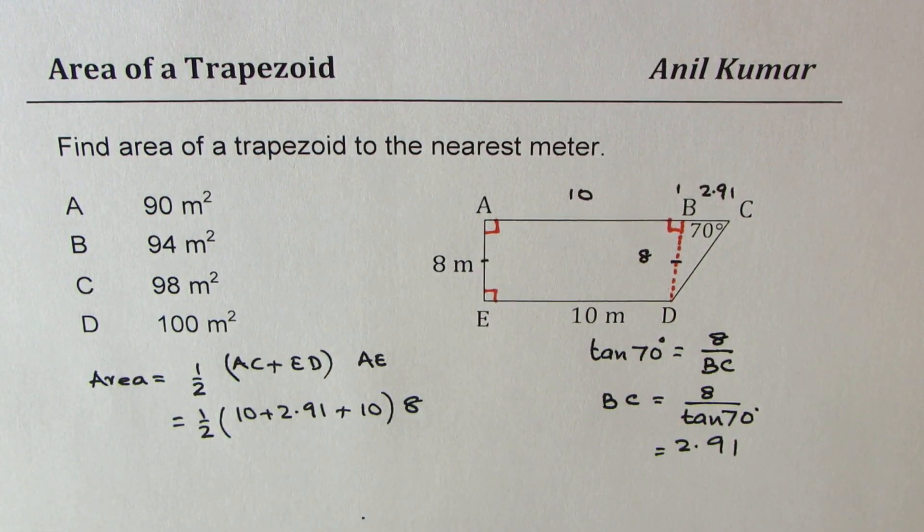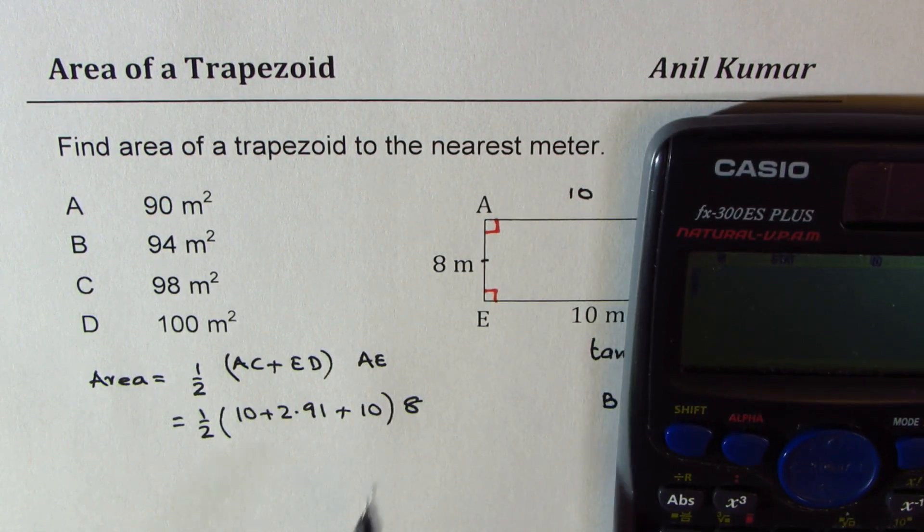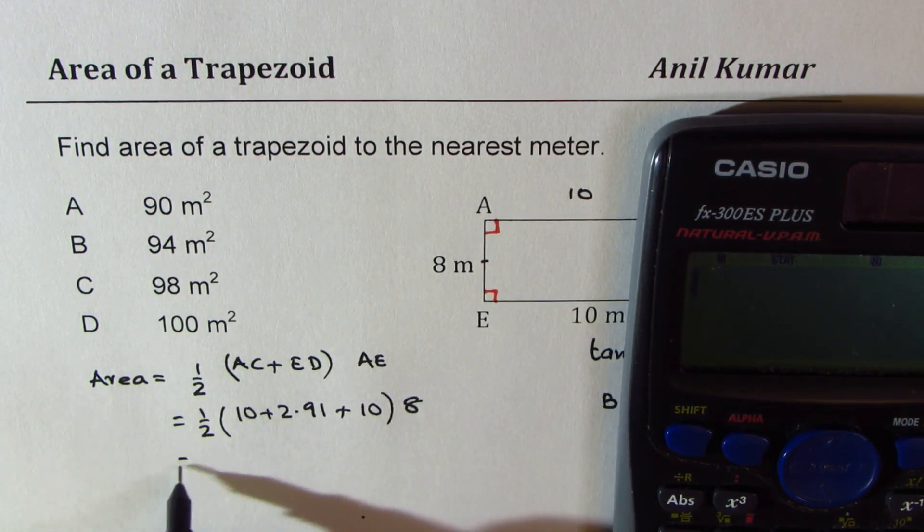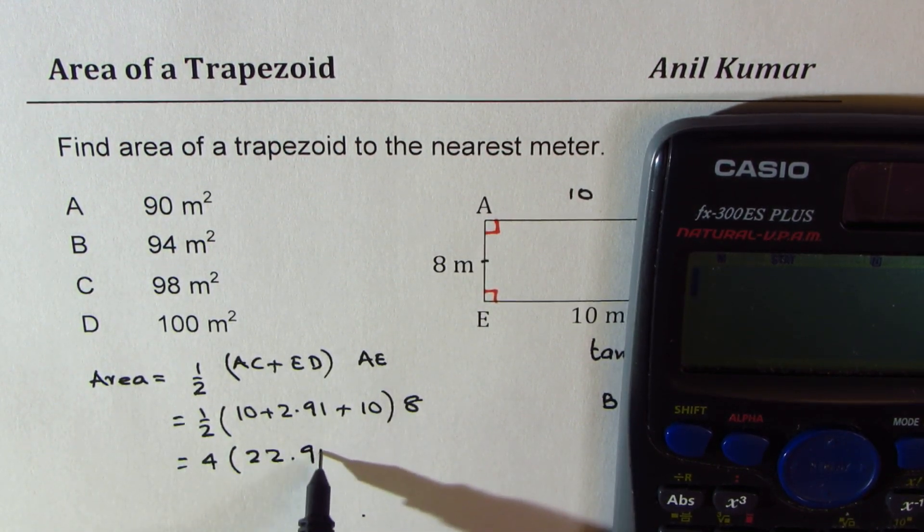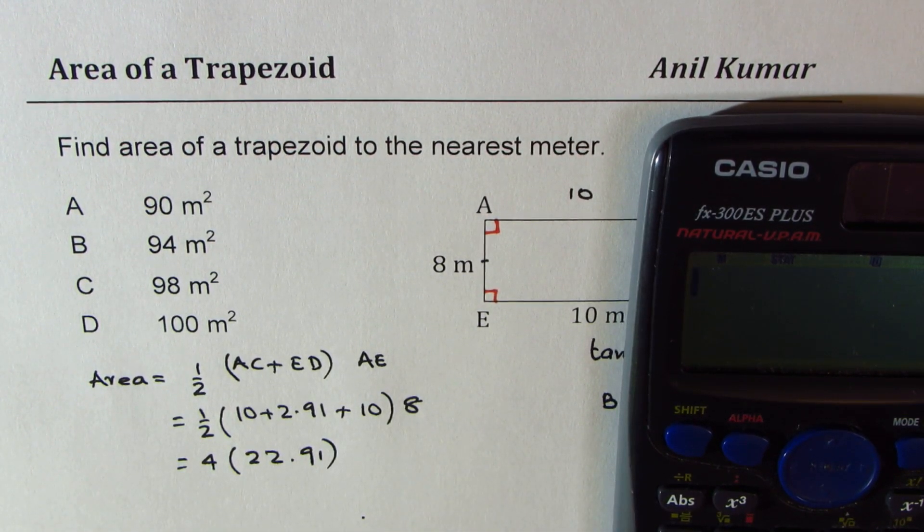So that should give us the answer. So it is half of 8 is 4. So we can write 4 times 22.91. So we get 4 times 22.91 which is equal to 91.64.